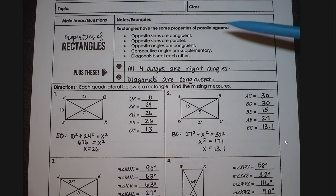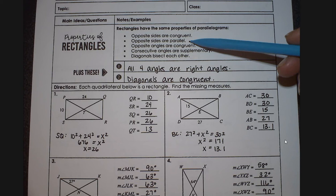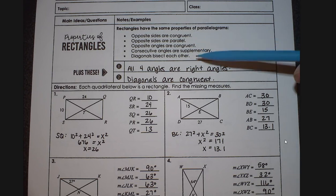For properties of rectangles, we want to remember opposite sides are congruent, opposite sides are parallel, opposite angles are congruent, consecutive angles are supplementary, and diagonals bisect each other.